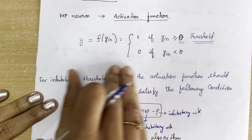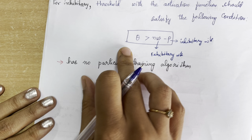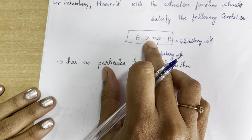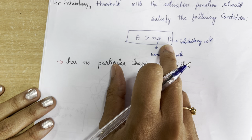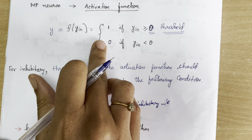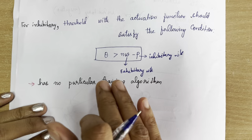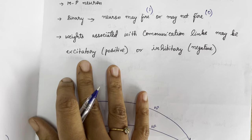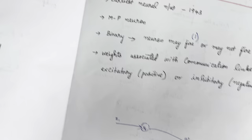This is how this McCulloch-Pitts neuron works. To find the threshold value, we use the formula: theta is greater than or equal to n·w minus p, where n represents the number of weights, w represents the number of excitatory weights, and p represents the number of inhibitory weights. There is no particular training algorithm for this McCulloch-Pitts neuron.